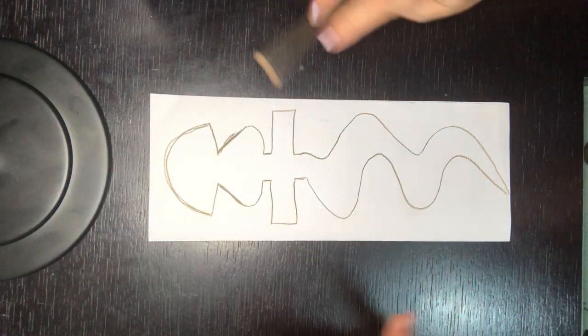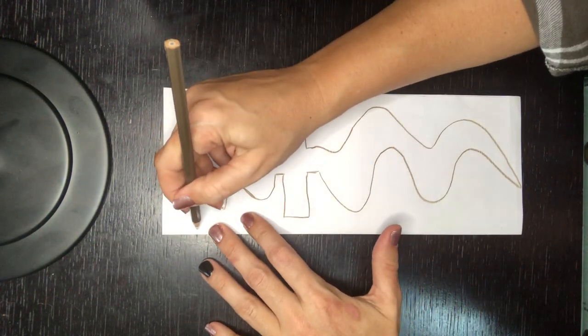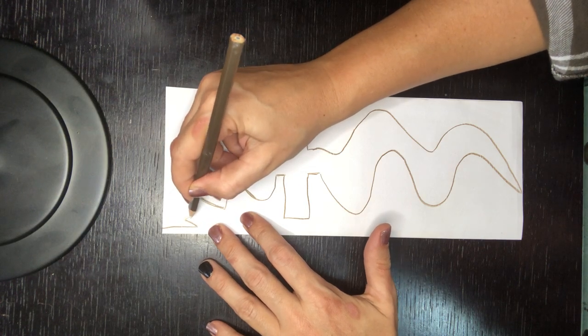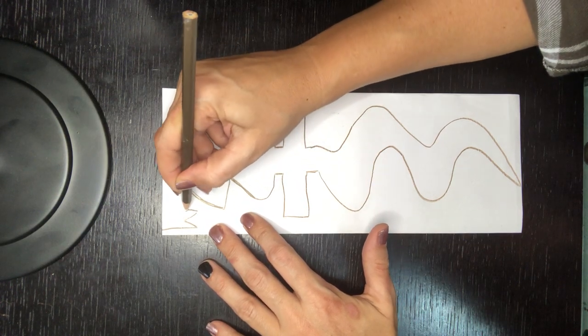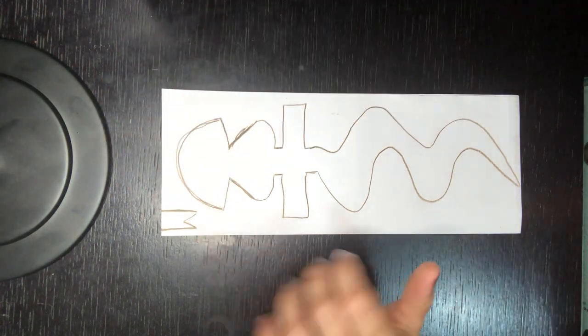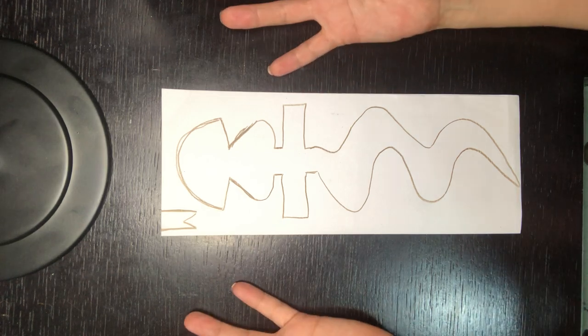Alright now that we have our drawing we have one last thing to do. We need to make the tongue of our snake. Now this snake's tongue can be as long as you want it to be, as wide as you want it to be, or as unique as you want it to be.